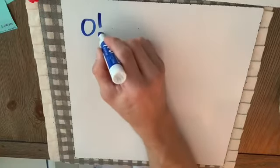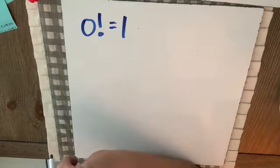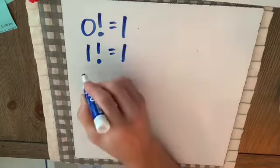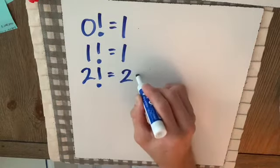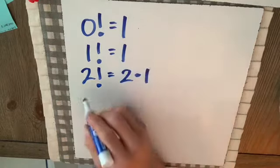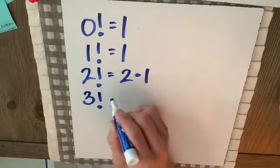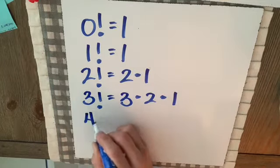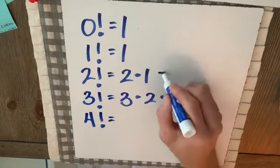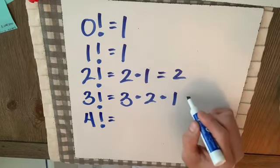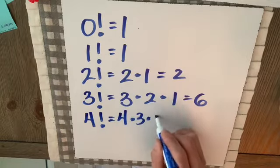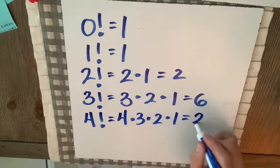Let's see how this factorial works. We've defined 0 factorial as 1. 1 factorial is simply 1 as well. 2 factorial is 2 times 1, which is 2. 3 factorial is 3 times 2 times 1, which is 6. 4 factorial is 4 times 3 times 2 times 1, which is 24.